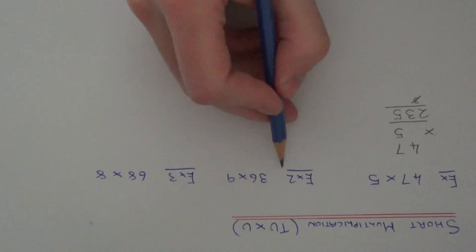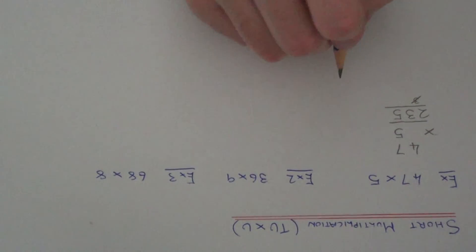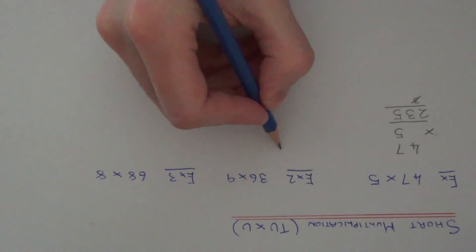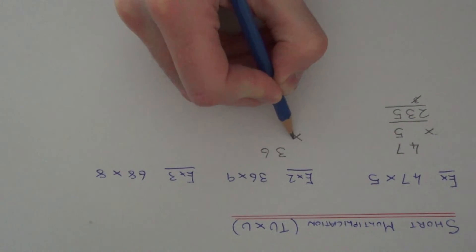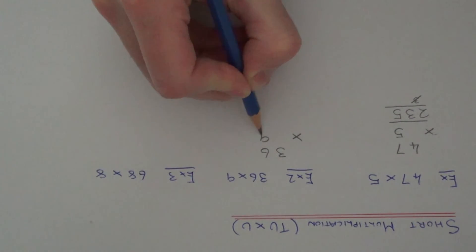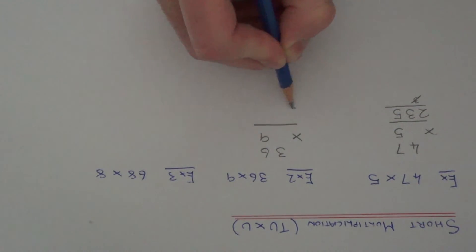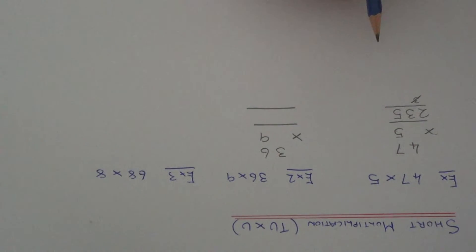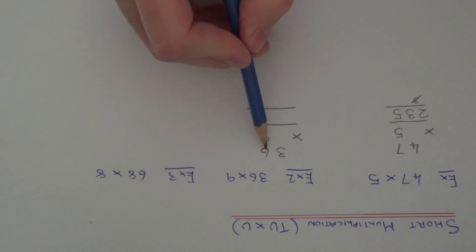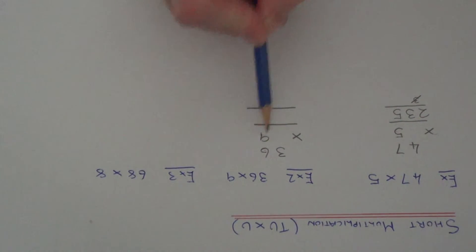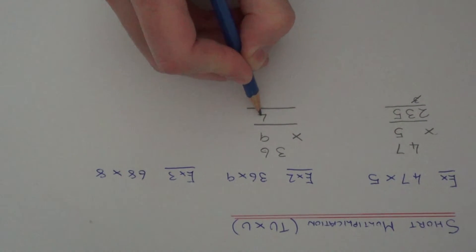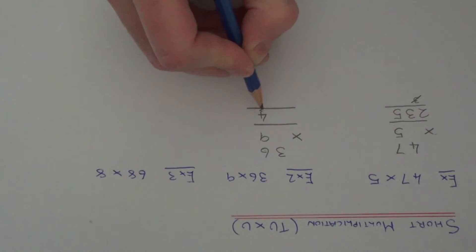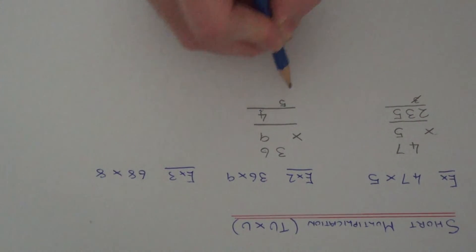So let's move on to example 2 — this time we've got 36 times 9. Lay out the numbers like this and draw two lines underneath. First of all we need to work out 6 times 9, that gives 54. So we write the last digit here and carry the 5 underneath.